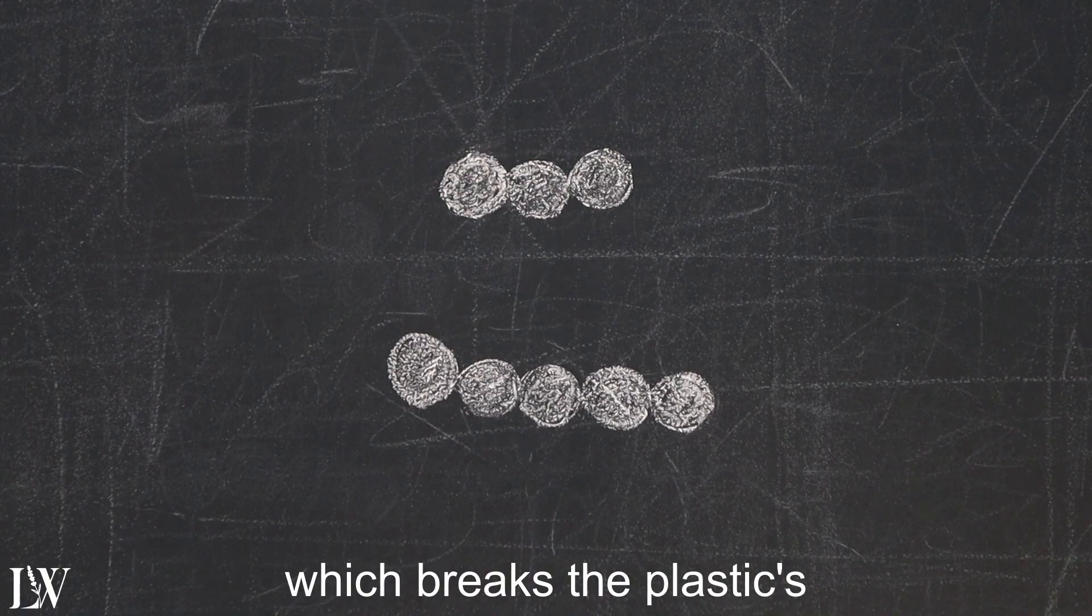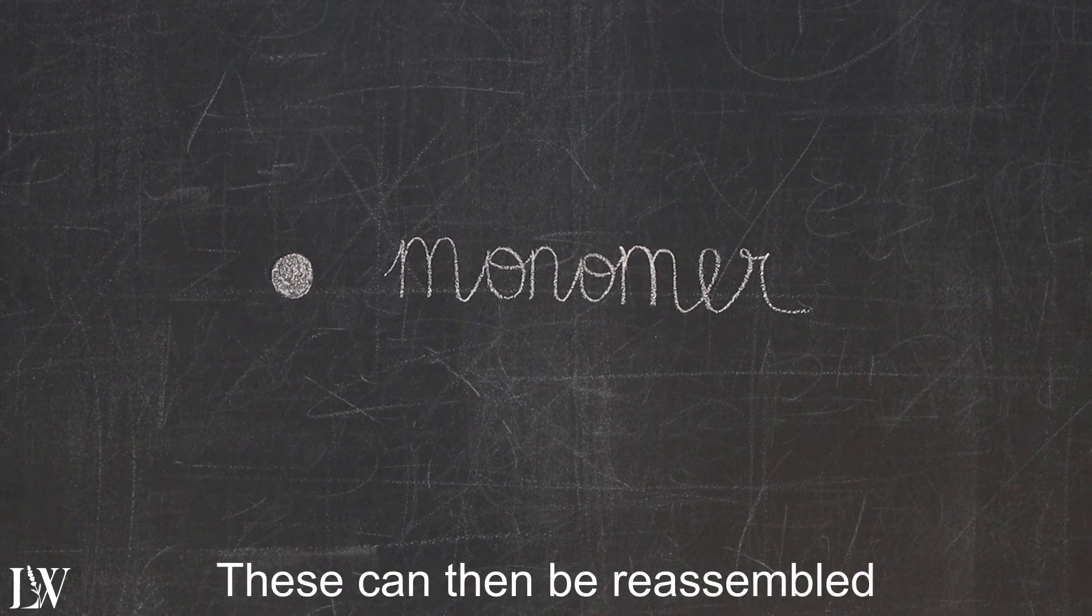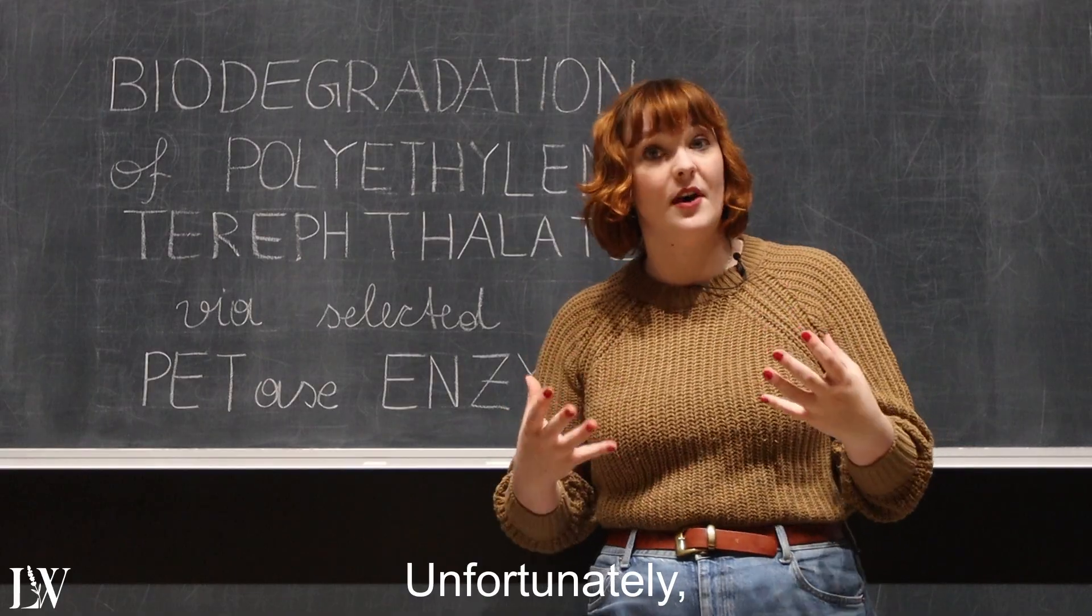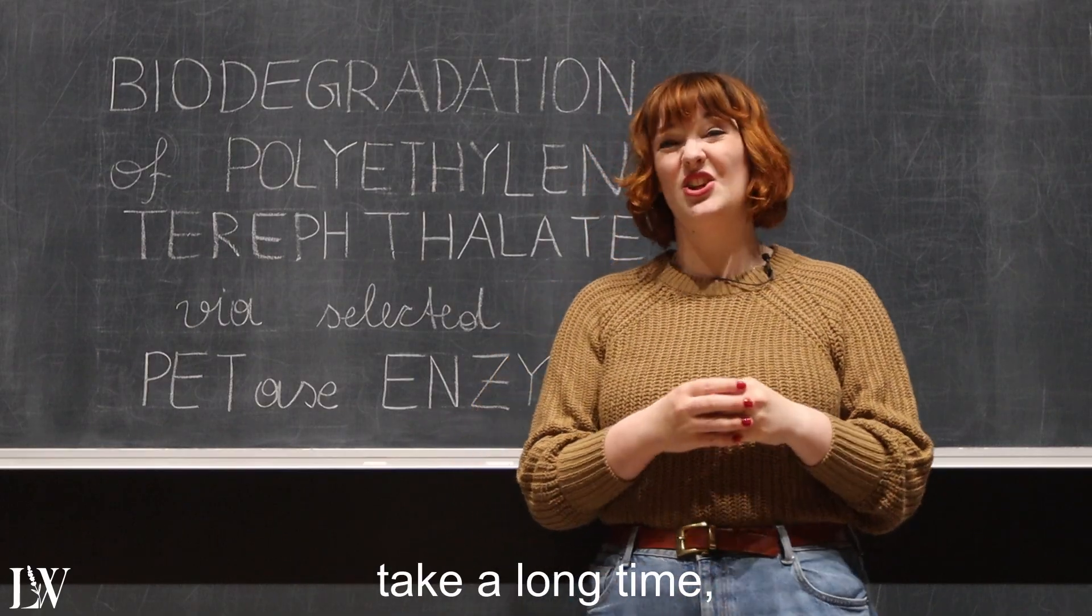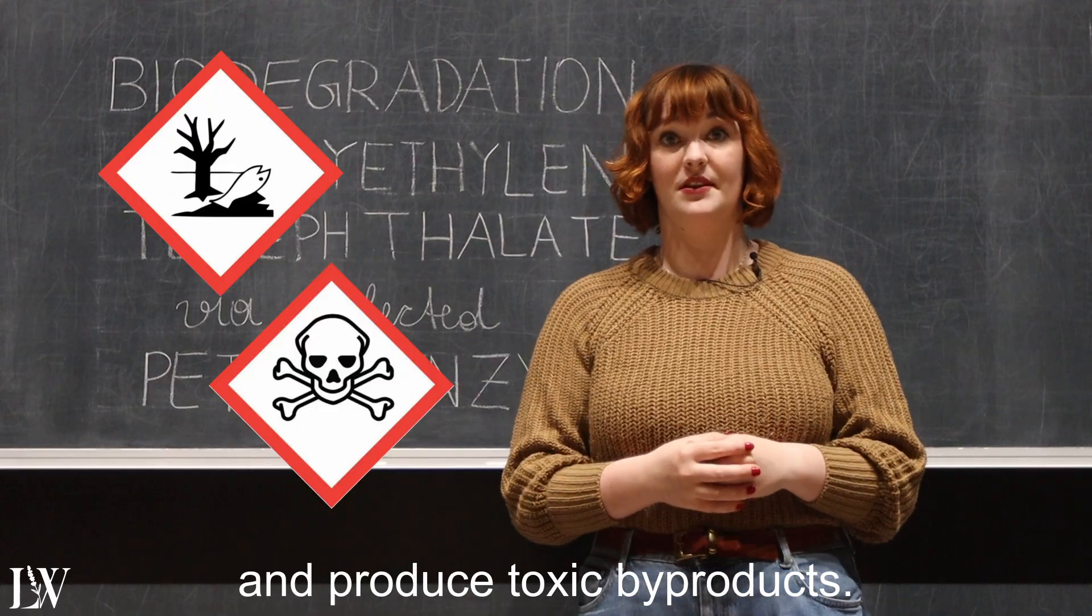Chemical recycling breaks the plastic's polymer chain down into its building blocks called monomers. These can then be reassembled into a new polymer. Unfortunately, these methods often take a long time, use lots of energy, and produce toxic by-products.